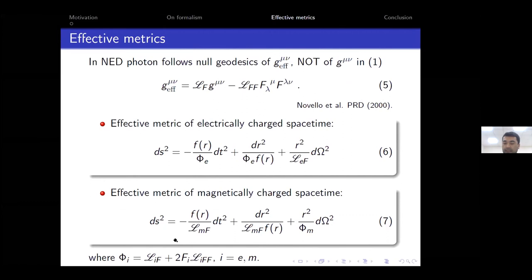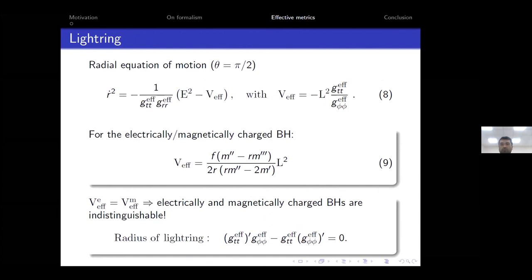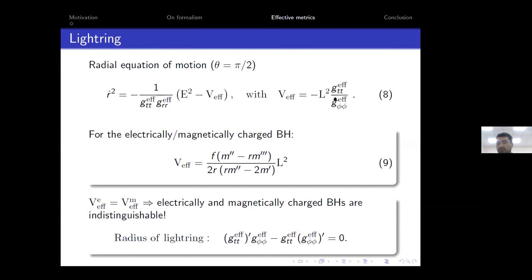When studying photon motion in the spacetime, the first quantity of interest is the photon sphere, or light ring. Considering the equatorial plane, we have the equation of motion for the light ring. Interestingly, the effective potentials for the electrically and magnetically charged cases turn out to be the same. For different spacetimes, the effective potentials are identical, meaning the light rings are at the same radius. Therefore, we cannot distinguish the type of charge by looking at the radius of the photon sphere or light ring.